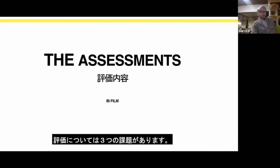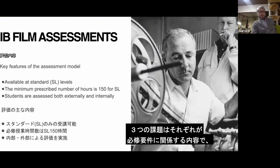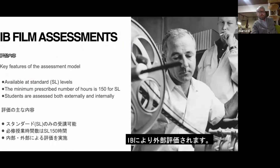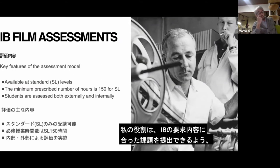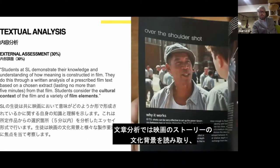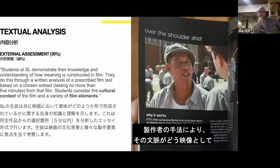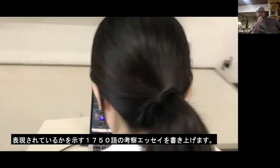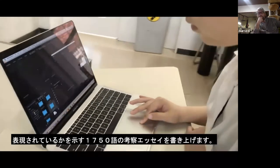Next, let's look at how students are graded: the three assessments. Each of the three assessments in IB film targets one of the core disciplines in the course. These are assessed externally by the IB — my job is to support the students and ensure they meet the IB's standards. First, the textual analysis assesses a student's ability to read both the cultural context of a film's story and how the film communicates with that cultural context through the filmmaker's choices. This assessment is a 1,750-word research and analysis.